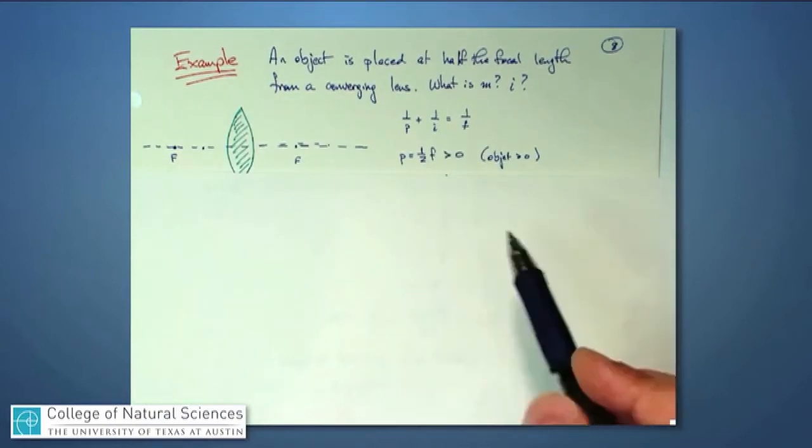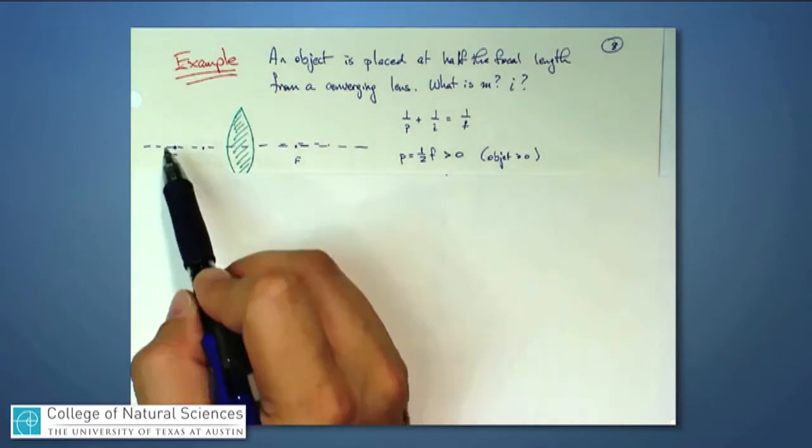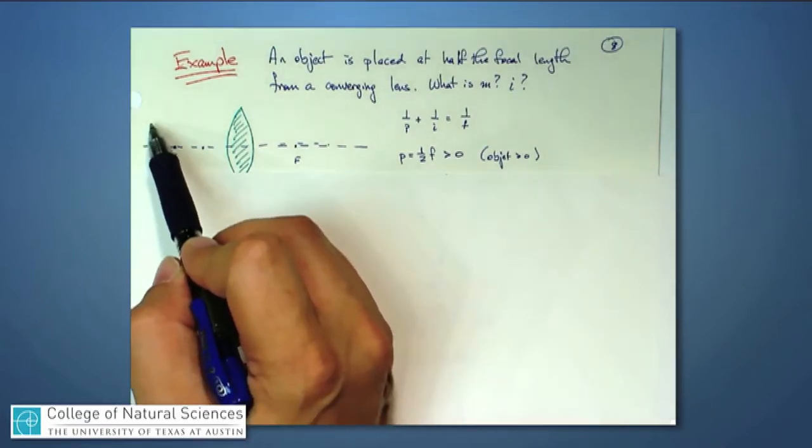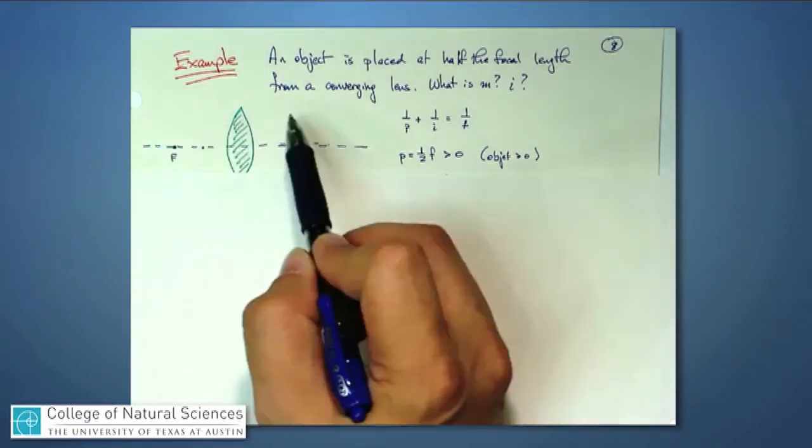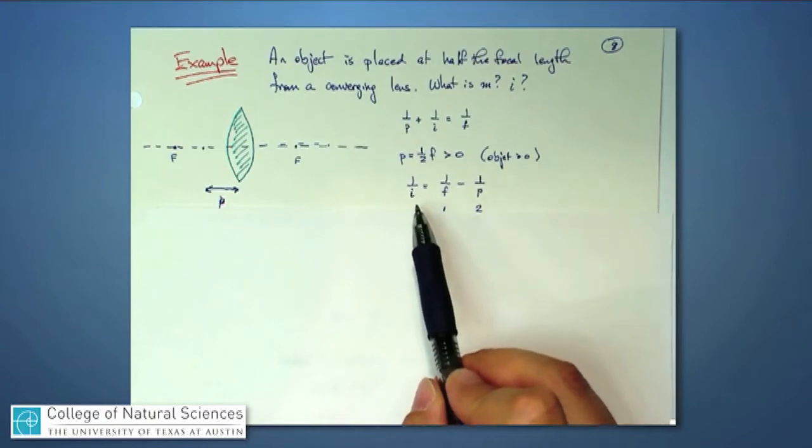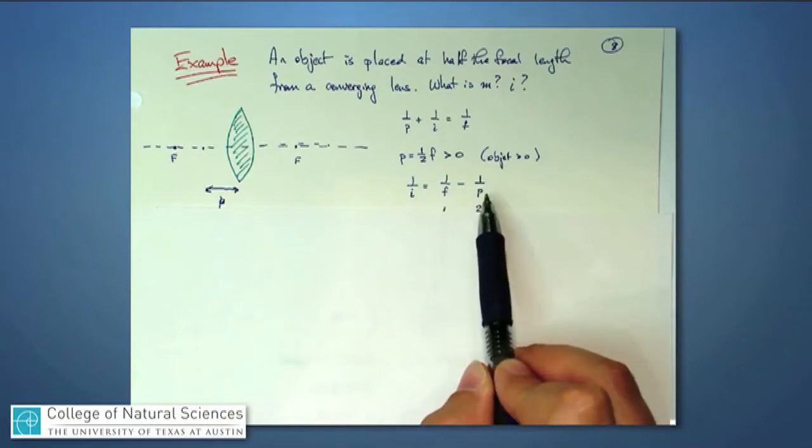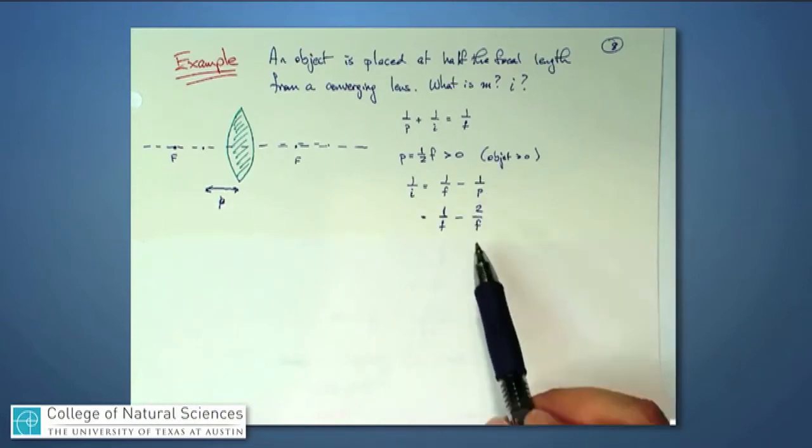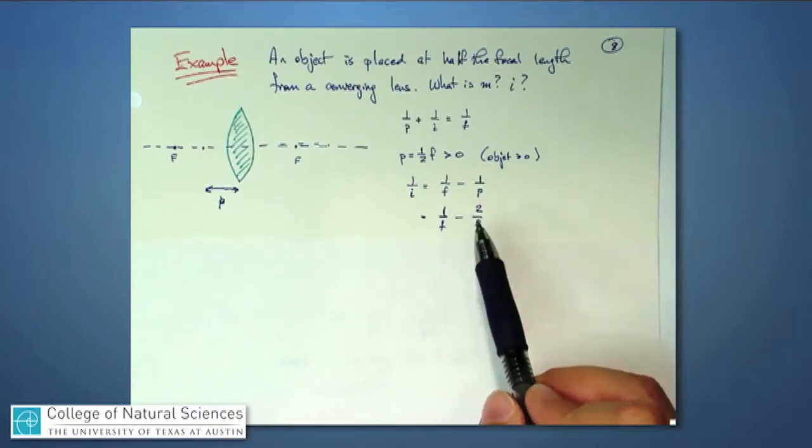And it's a positive number because we're saying that it's over on this side. This is always the so-called v side, and this is always the r side, and the object distance is always a positive number. So when I go back and I put terms on either side of the expression here, I now have 1 over i is 1 over f minus 1 over p. I'm going to insert for p, it's 1 over f minus 1 over f over 2, which becomes 2 over f.